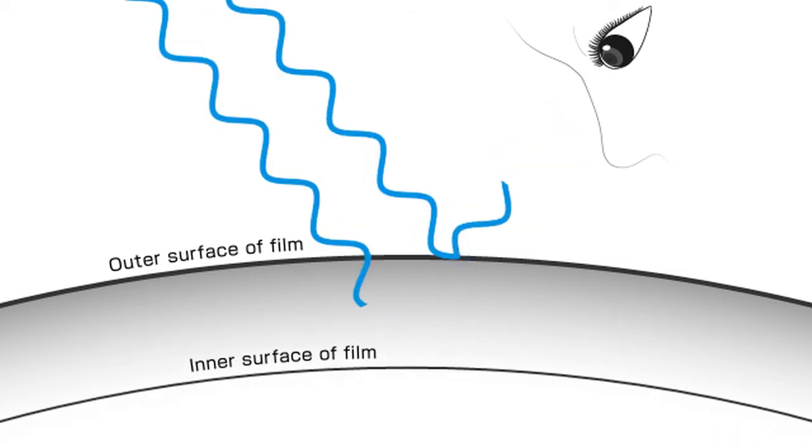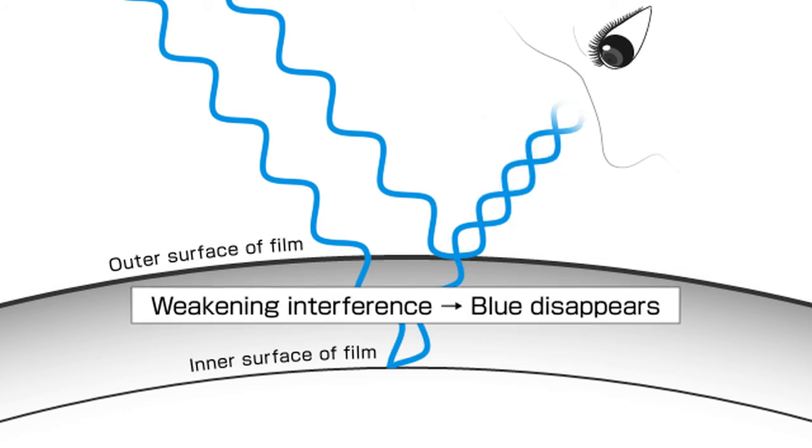If the peaks overlap with the troughs, the two waves are weakened, and the blue light is no longer visible. The same kind of interference occurs with red and green lights as well.